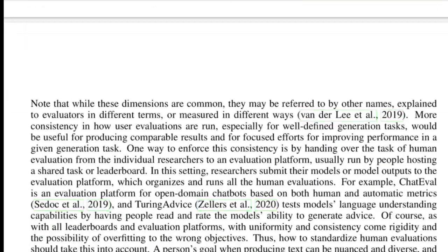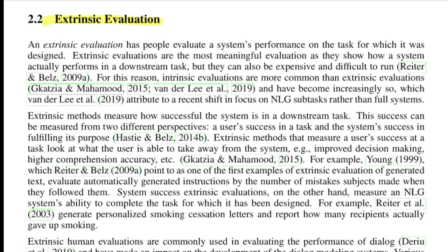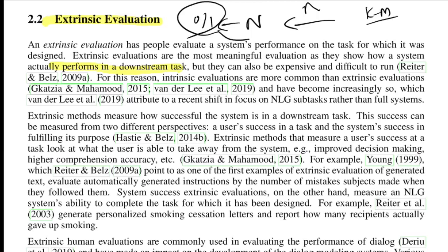Now moving to extrinsic evaluations — these evaluate performance on some downstream task. For example, consider you have N data points and cluster them using k-means, obtaining k clusters. To evaluate the quality of these clusters extrinsically, you send them to a network with a classification task of 0 and 1, and the accuracy of that model defines how good the clusters were. Intrinsic evaluation, by contrast, is self-contained and not dependent on the performance of any other downstream task.